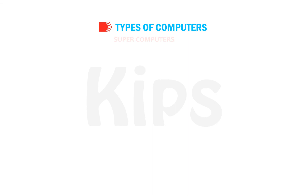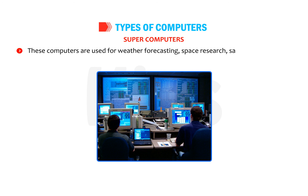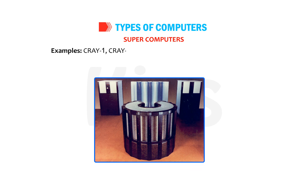Supercomputers: they are the most powerful computers with a huge processing speed. These computers are used for weather forecasting, space research, satellite control, etc. Examples include C-Ray-1, C-Ray-2, Param, Tianhe-2, Sunway TaihuLight, etc.